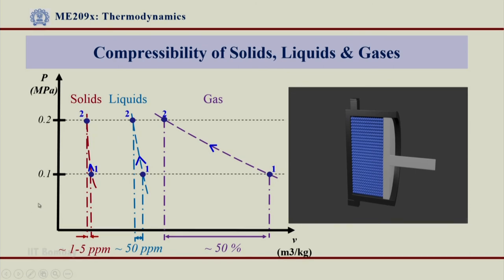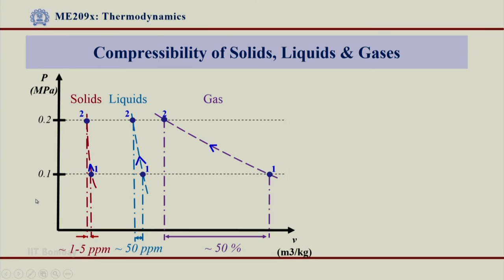Can I conclude something from this? If I want to have some approximation now I can conclude that the solids and liquids are incompressible while the gases are compressible. And if I now give the definition to the fluids, the fluids are only liquids and gases. I say gas is compressible but the liquid is incompressible.